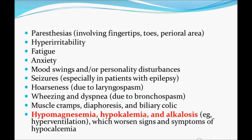The symptoms and signs are very important because in the USMLE they will give signs and symptoms and you need to diagnose clinically rather than relying only on lab findings. Paresthesia involving fingertips, toes, and perioral area; hyperirritability; fatigue; anxiety; mood swings; seizures; hoarseness; wheezing and dyspnea; muscle cramps; diaphoresis; and abdominal colic. Most importantly, remember hypomagnesemia, hypokalemia, and alkalosis.